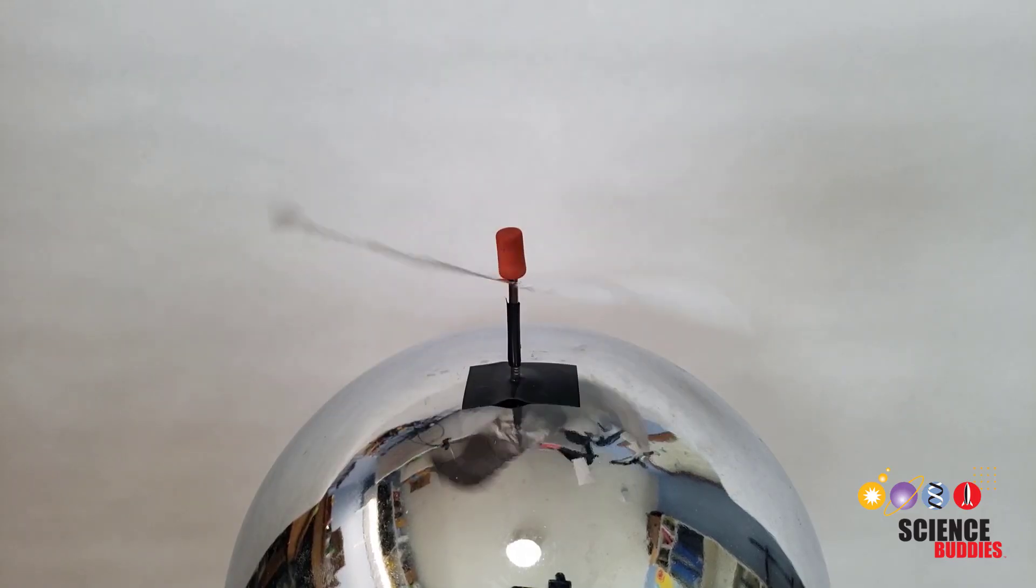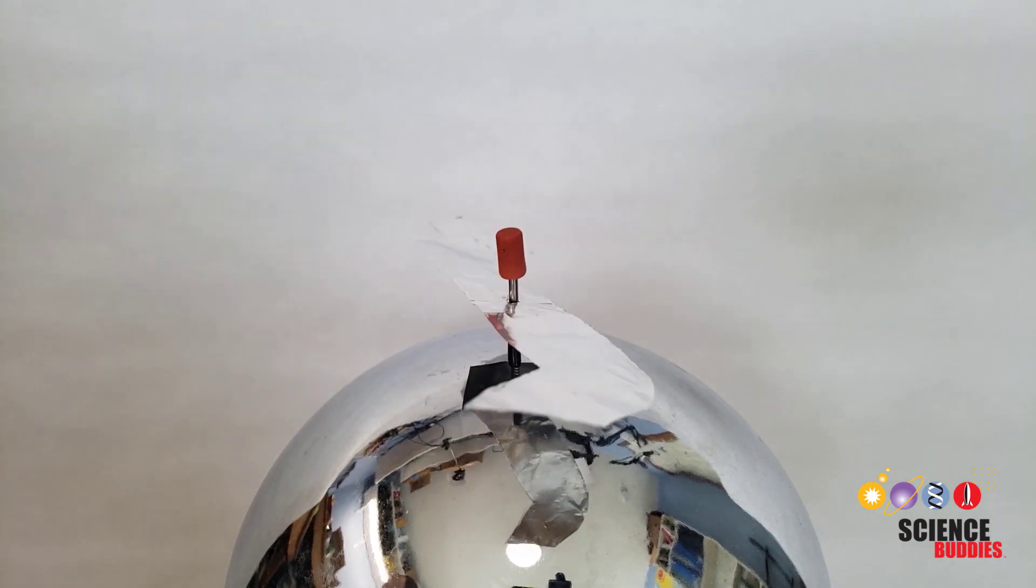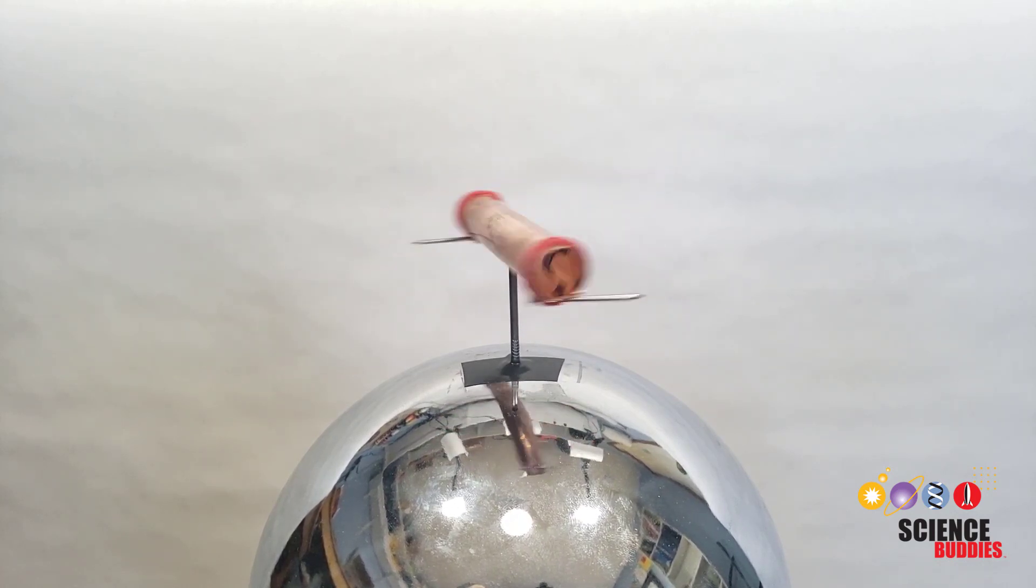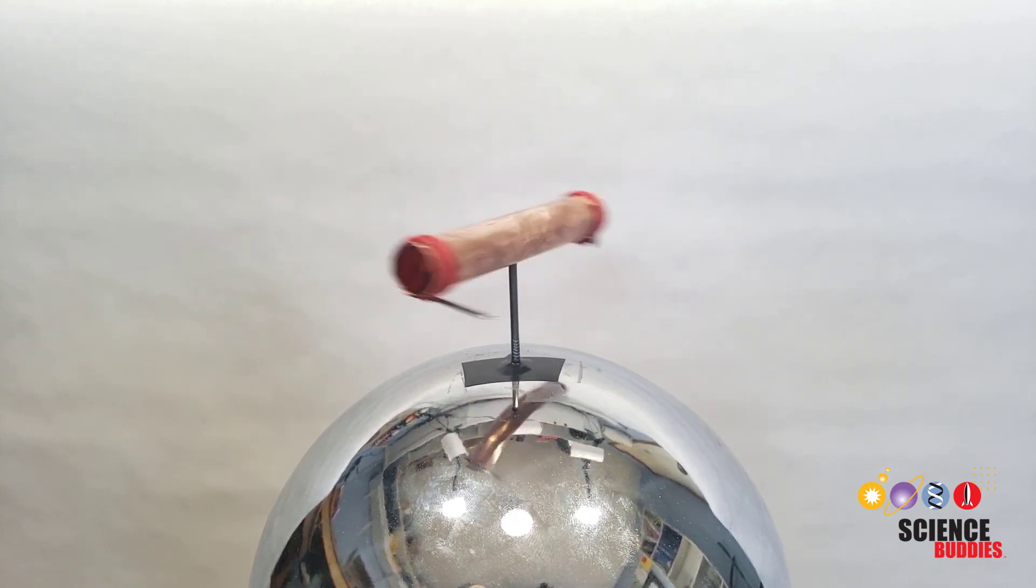And while this version works well as a demonstration, there can be a lot of friction with the nail and performance is not always consistent. In this video, I'll show you how to build an improved version with a copper pipe that acts as a much lower friction bearing. Let's get started.